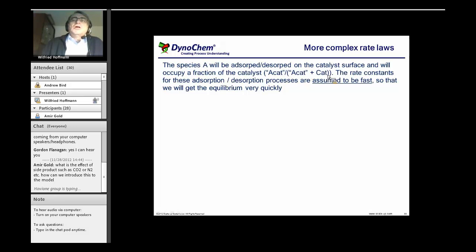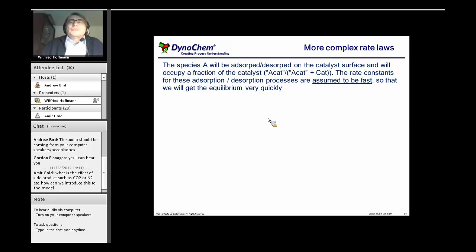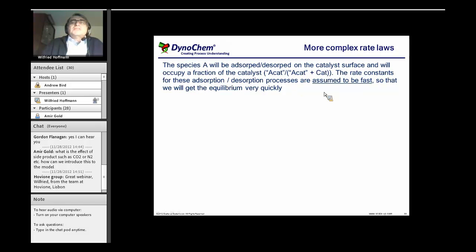In DynoChem we can of course also define this as an equilibrium constant going from 0 to infinite, but it's quite easy to convert the Langmuir fraction with the DynoChem equilibrium. In his theory he assumed that these rates to achieve the adsorption are usually fast compared to the chemical reaction, so that we get the equilibrium very quickly.